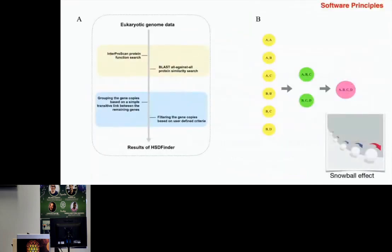Here is the principle of detecting and grouping duplicates for eukaryotic genomes. The flowchart uses a BLAST all-against-all protein similarity search, applying parameters including amino acid pairwise identity and amino acid length variance. We based the software principle on a simple transitive link, grouping similar duplicates together based on transitive links between remaining genes.